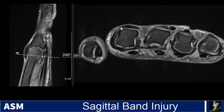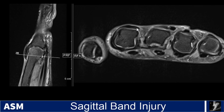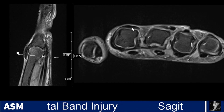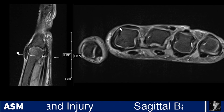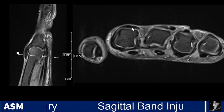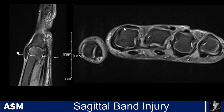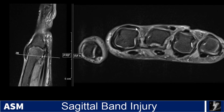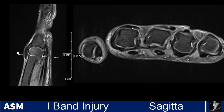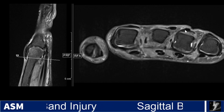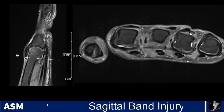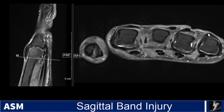The extensor tendons are usually held in place by the sagittal bands at this level — there's a radial sagittal band and an ulnar sagittal band — and this is just part of the extensor apparatus stabilization. They should be thin and hypointense. You can see the second digit, the unaffected one, looking pretty normal. The fourth digit as well, sitting central and dorsal with intact sagittal bands. The same for the fifth.